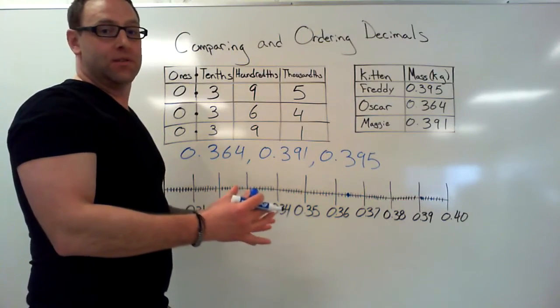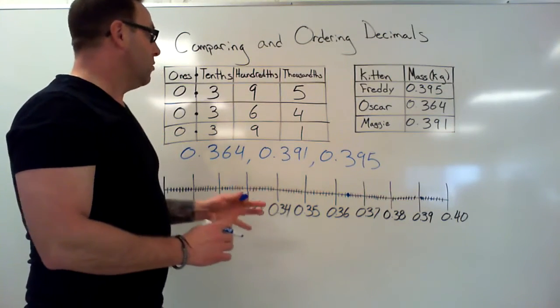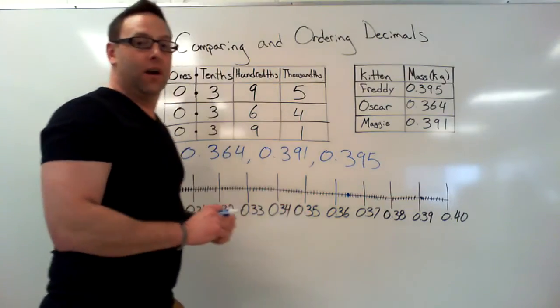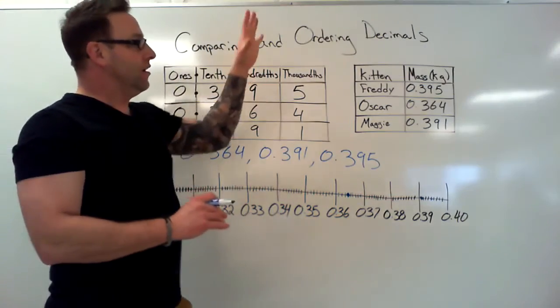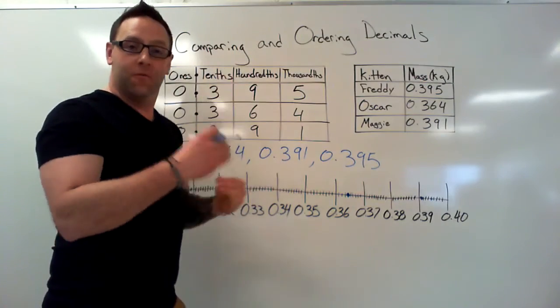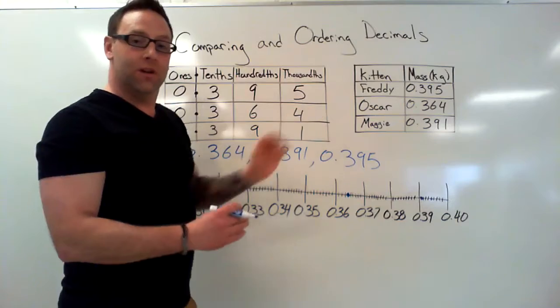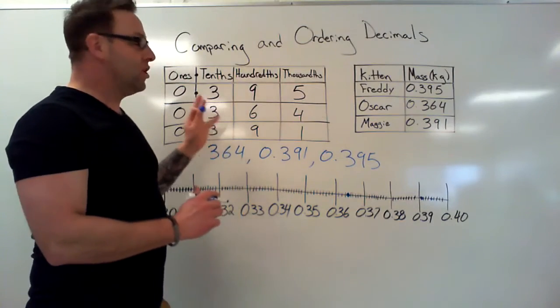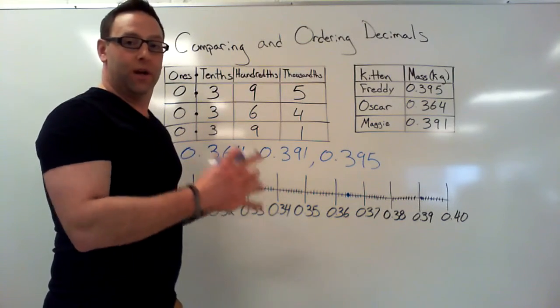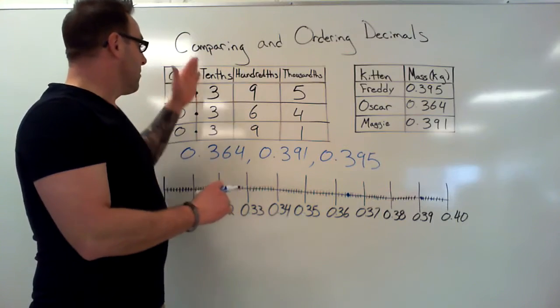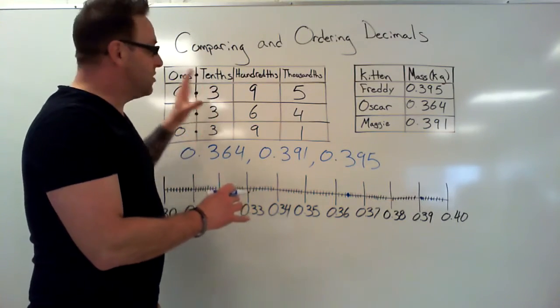Okay, so to summarize, when we're comparing decimals, we have to think of it like alphabetical order. We have to look at each place value individually in order to determine which decimal is bigger.